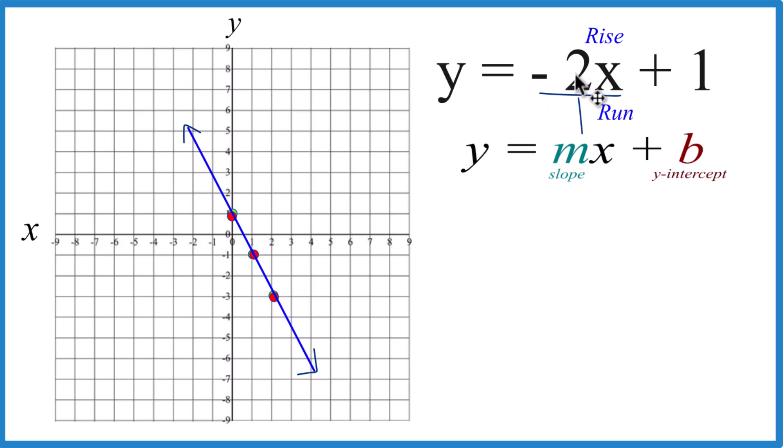So this is the graph for y equals negative 2x plus 1, or you could say y equals 1 minus 2x using slope-intercept form. And earlier, we used a table of values, got the same answer.